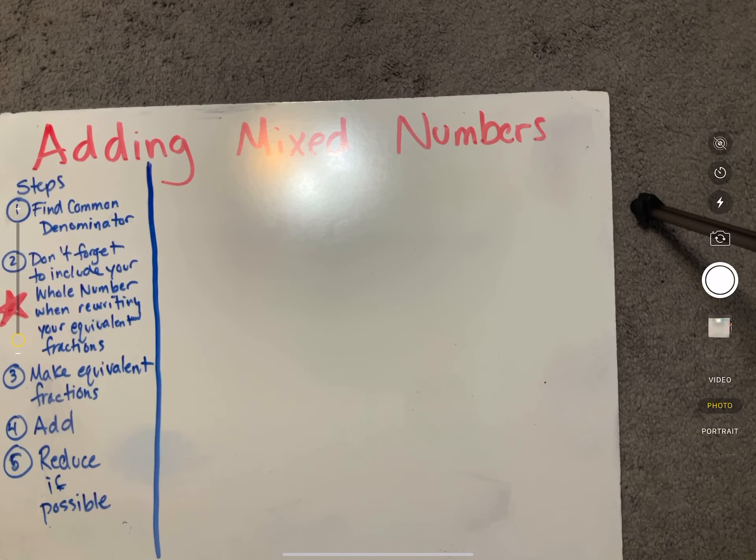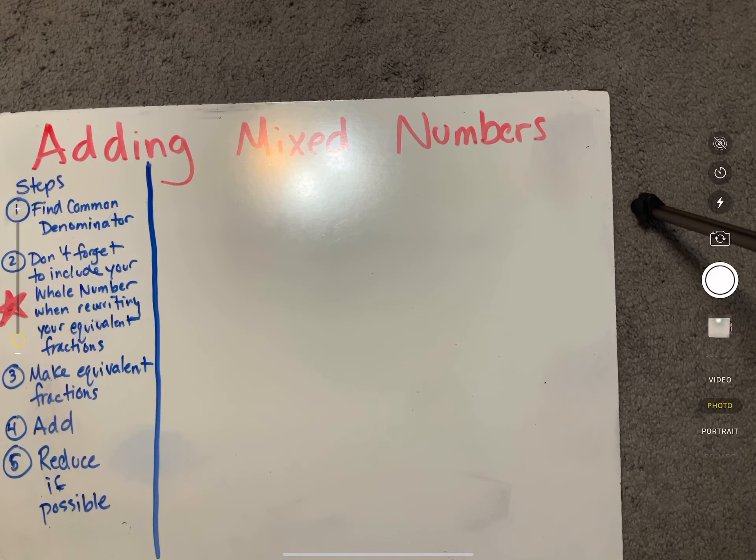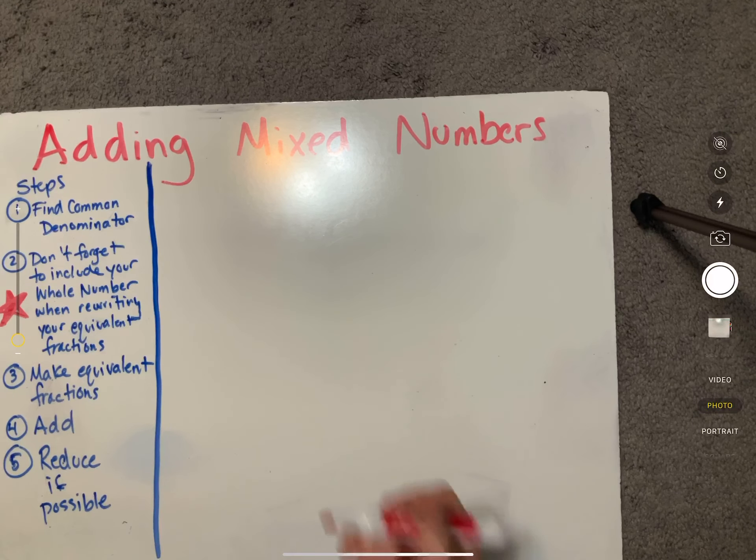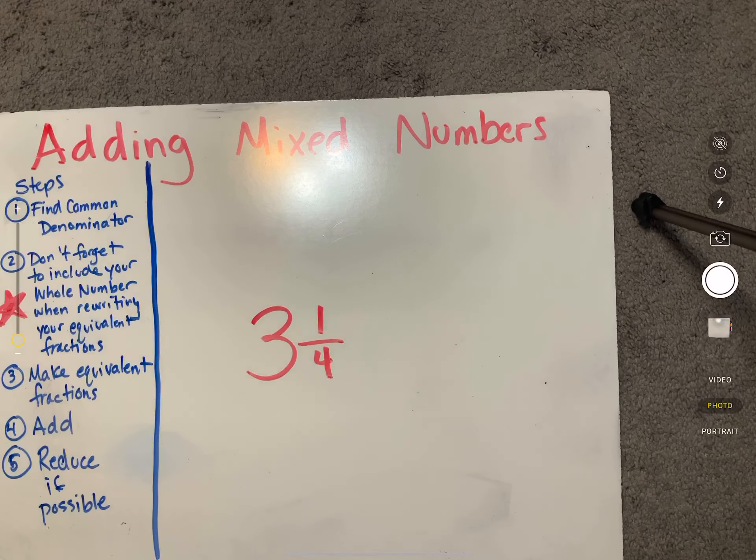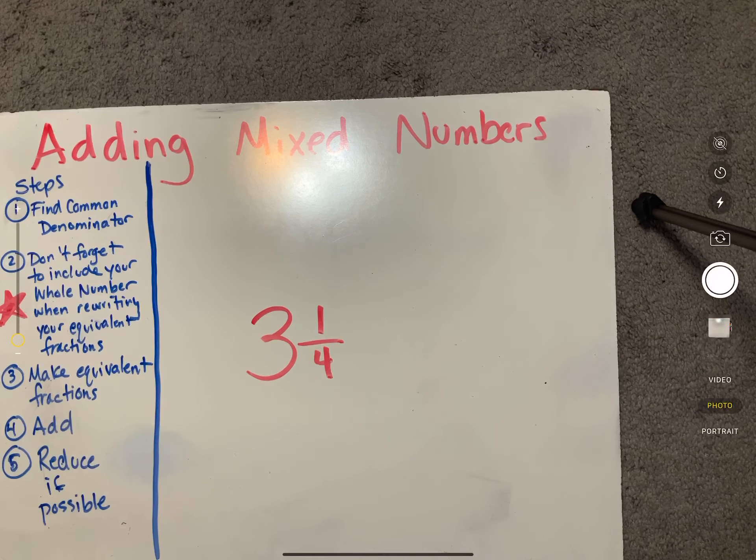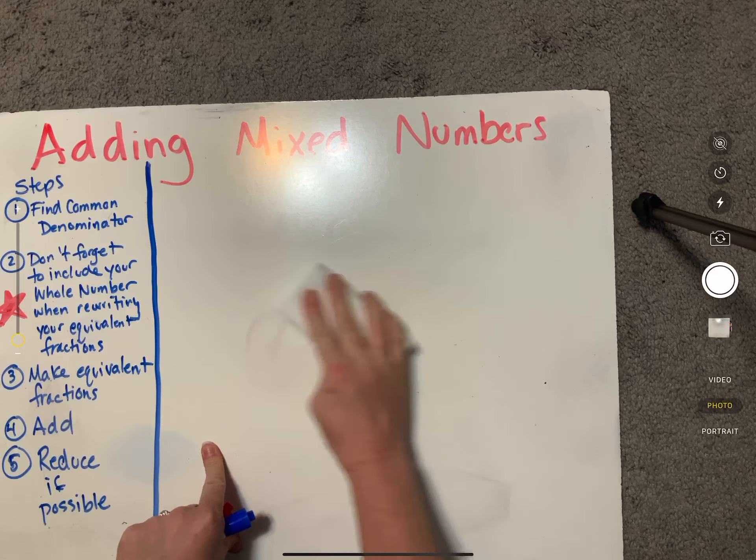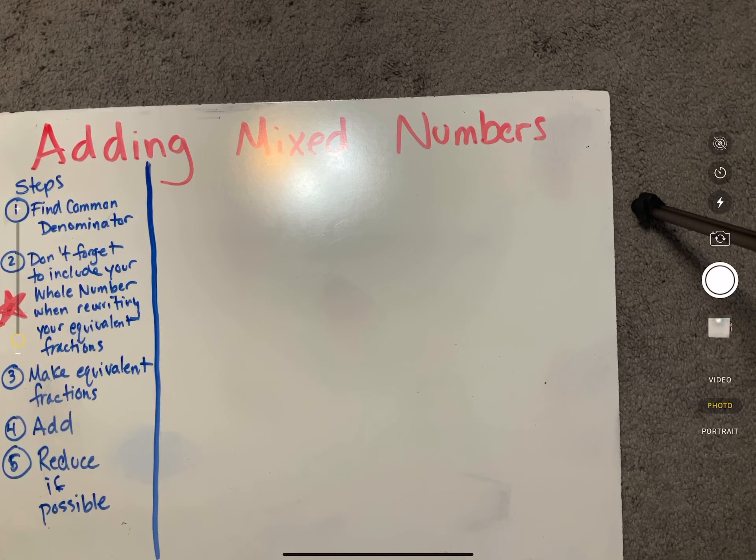We're going to add mixed numbers today. If you remember, a mixed number is a whole number and a fraction next to it. Just a reminder, when you're writing your fractions, your whole number needs to be the same height as the fraction next to it so that you don't get confused about which part is the whole number and which is the fraction.